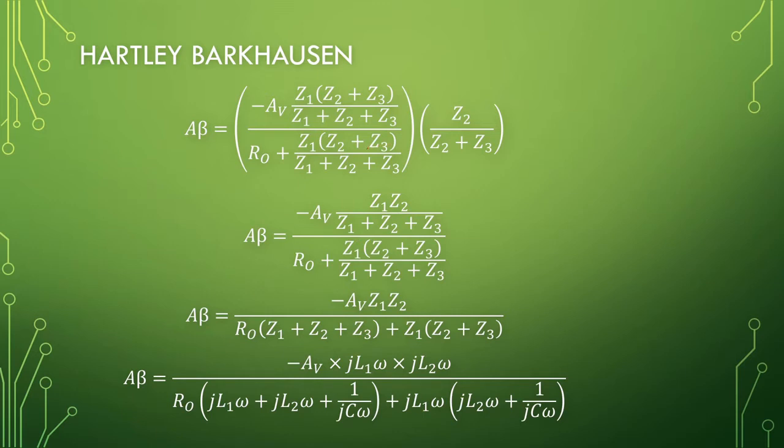We can multiply our gain and our frequency selective network with one another, and you'll see that these two terms cancel. And then top and bottom we have Z1 plus Z2 plus Z3 available on the top, so we just multiply top and bottom of that, and we are left with a simplified equation down here.